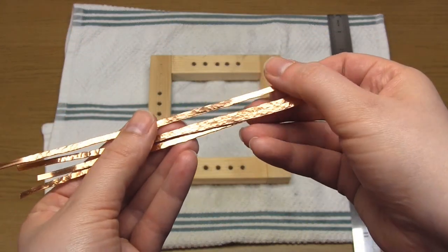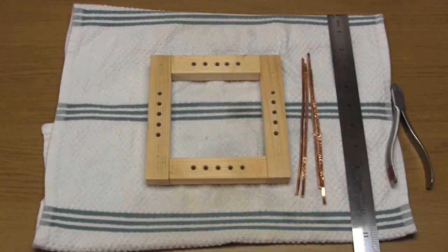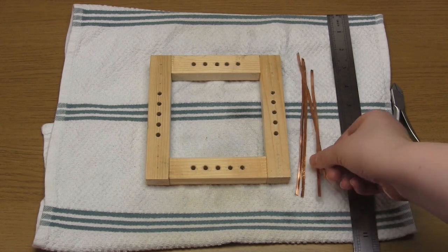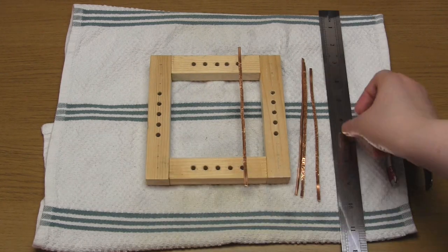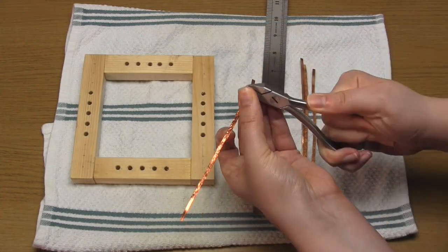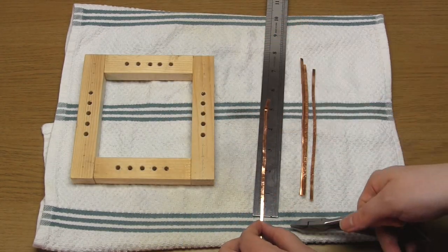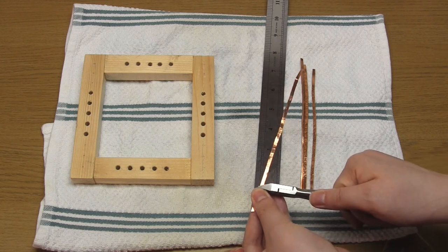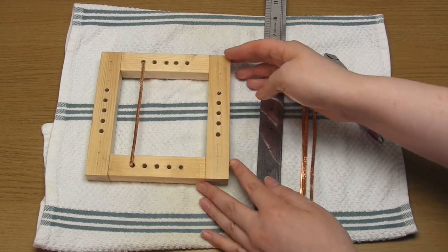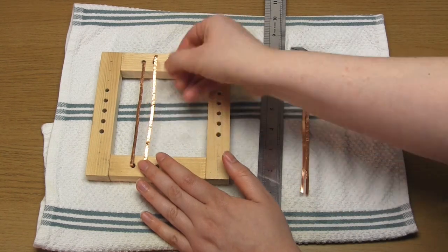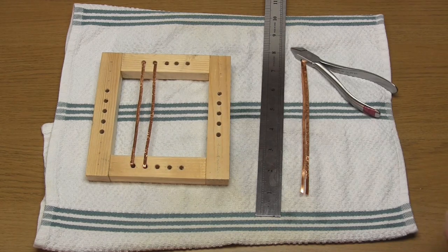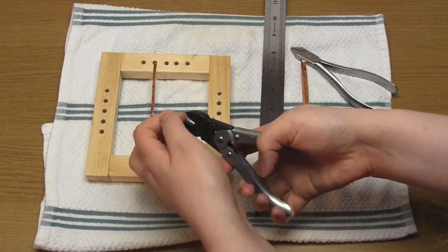You then need to use some pliers to bend these pieces. The distance between the bends should be the same as the distance between the holes in the frame. So in my case that's five inches. As you can see I did this twice and placed the pieces vertically on the left of the frame.